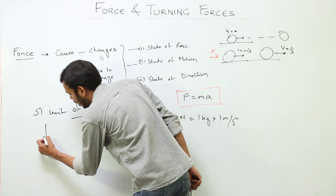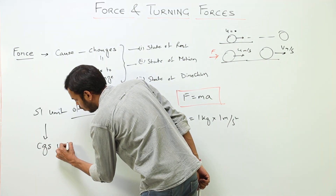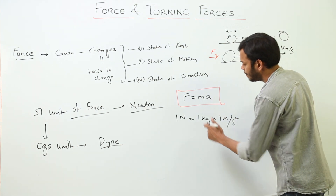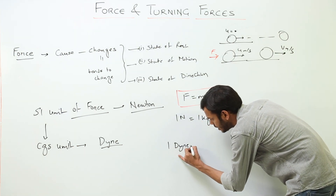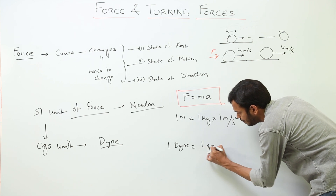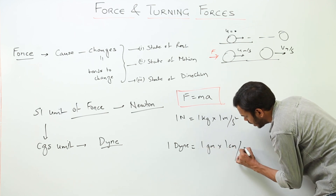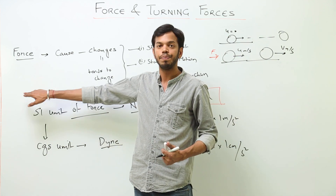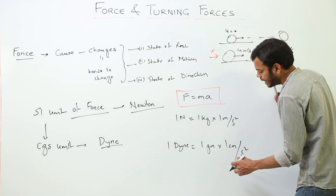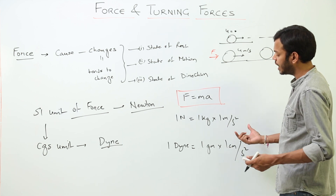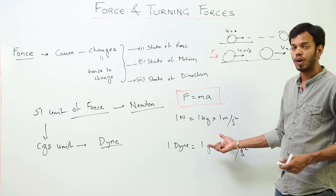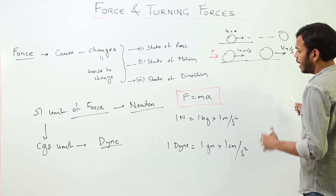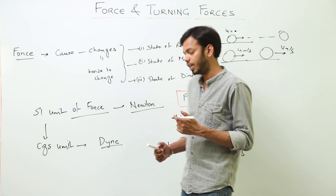The CGS unit of force is called the dyne. 1 dyne equals 1 gram × 1 cm/s², because in the CGS system we use centimeters, grams, and seconds, whereas the SI unit follows the MKS system — meter, kilogram, and second. Similarly, when a force acts on a body of mass 1 gram such that it moves with an acceleration of 1 cm/s², the force acting is said to be 1 dyne.